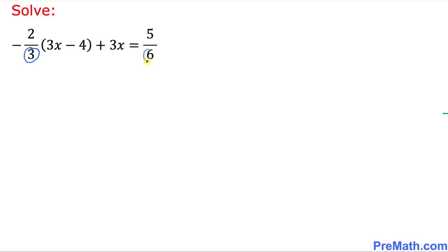3 and 6. So we are going to find the least common denominator or least common multiple of these two numbers, 3 and 6. So the least common denominator, our LCM, turns out to be 6.